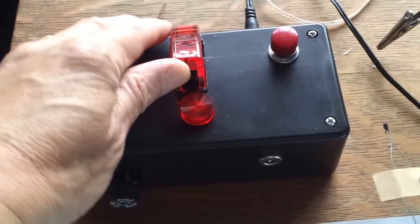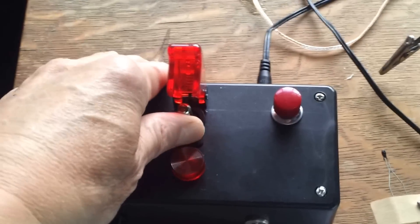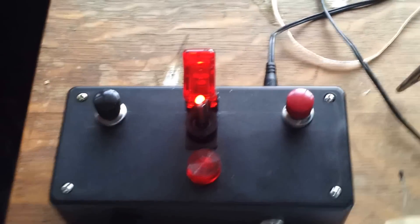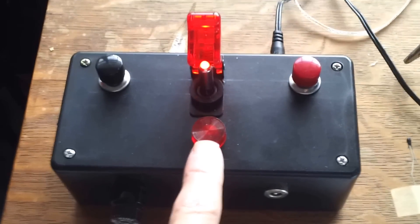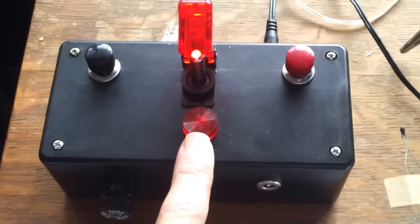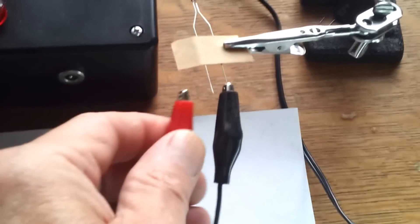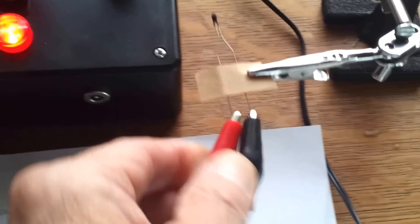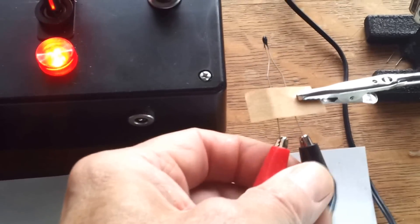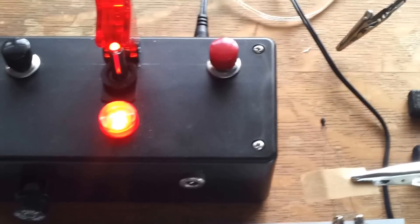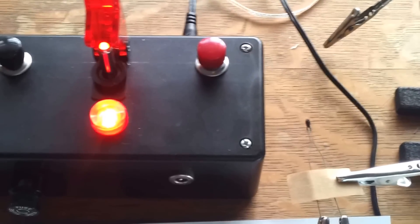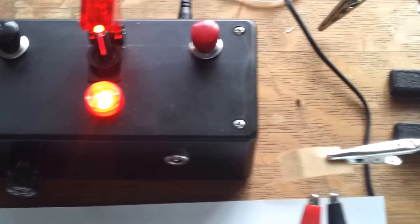When you turn the safety switch on, the master light comes on, but notice the continuity light is not turned on. So you connect your fuse, and the continuity light comes on.